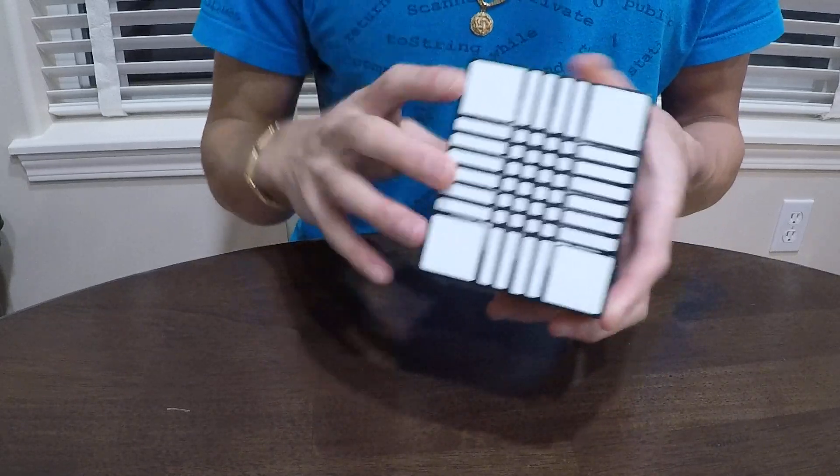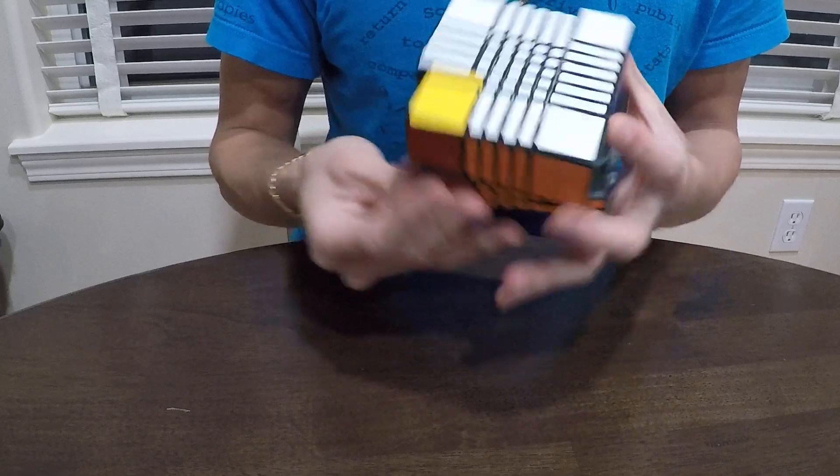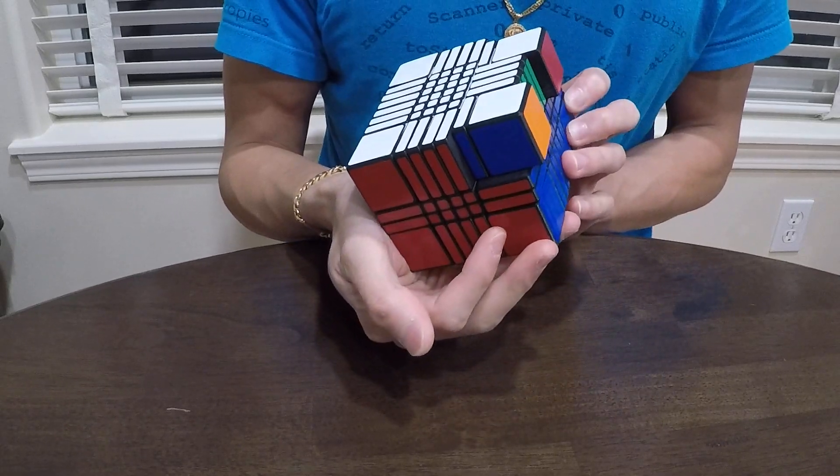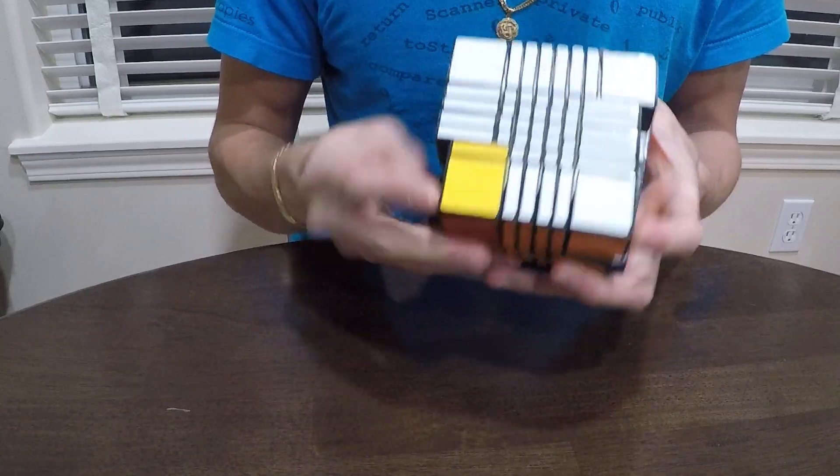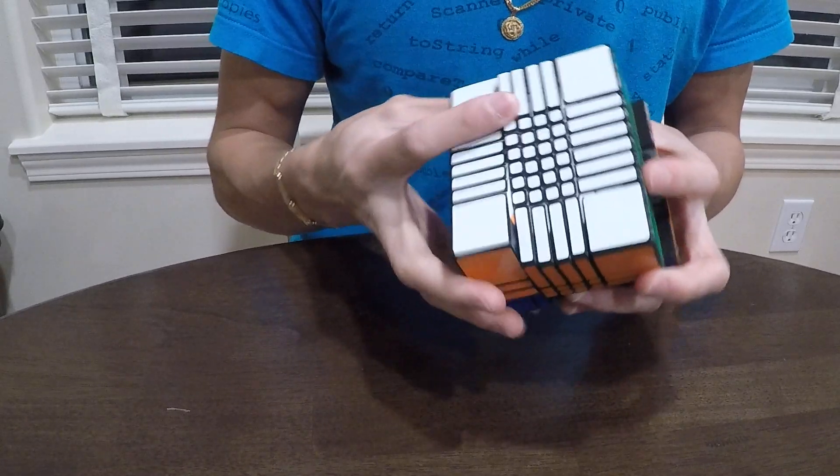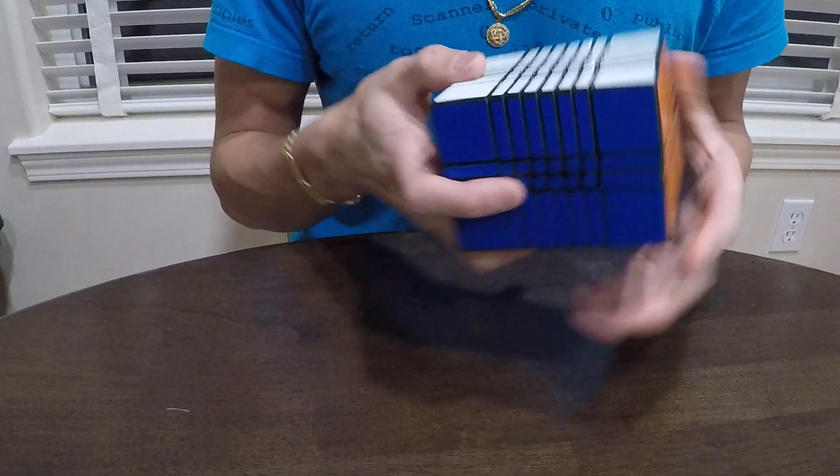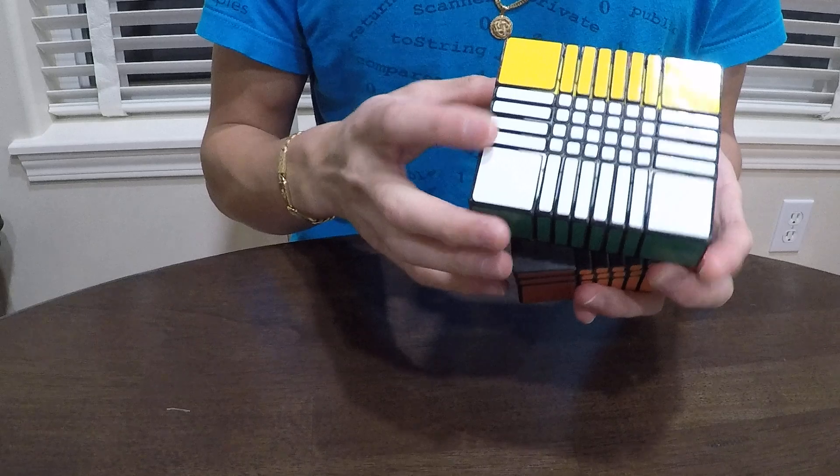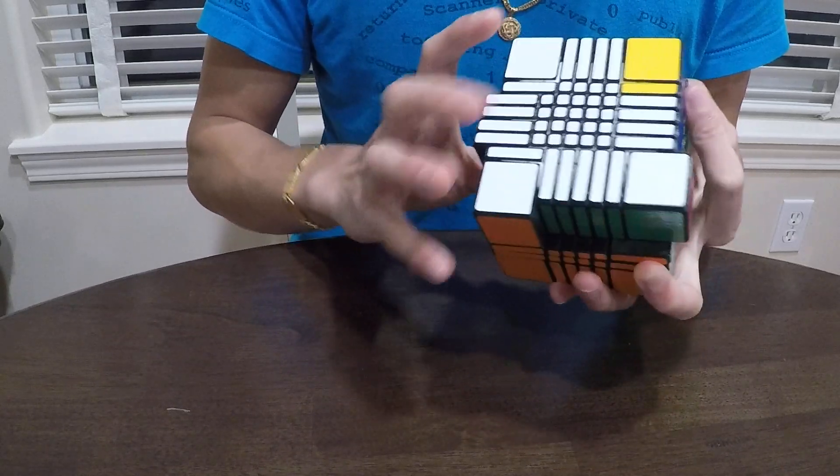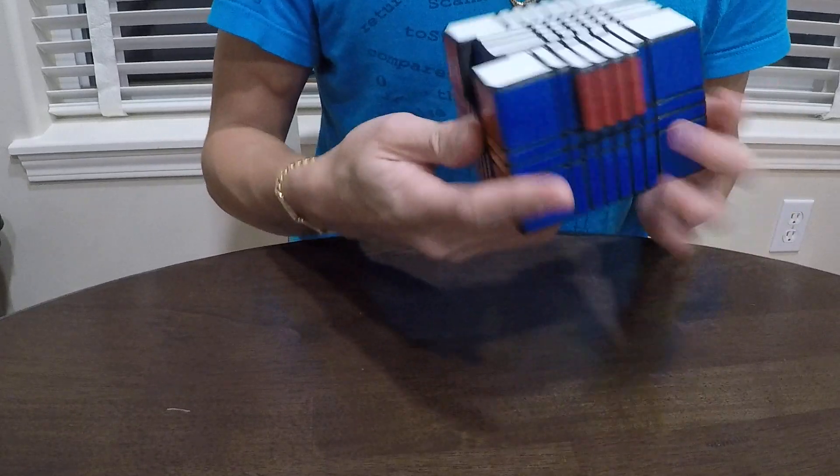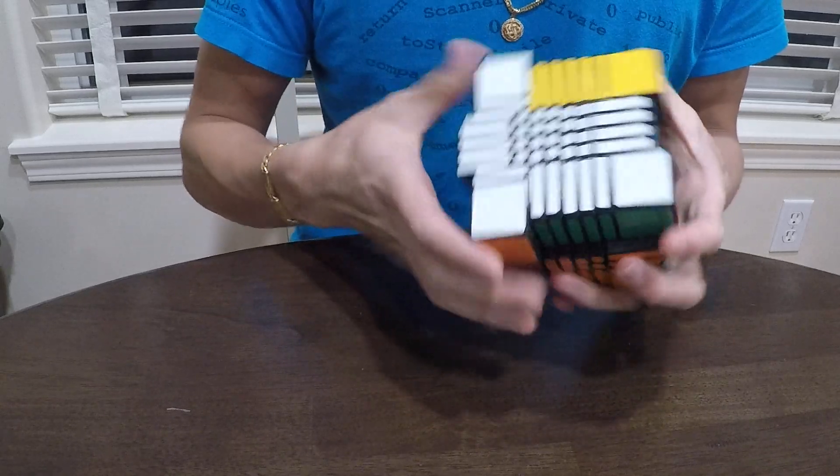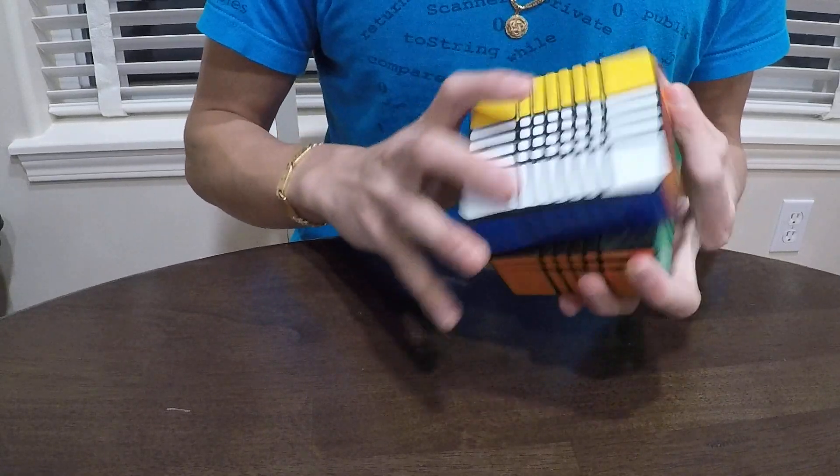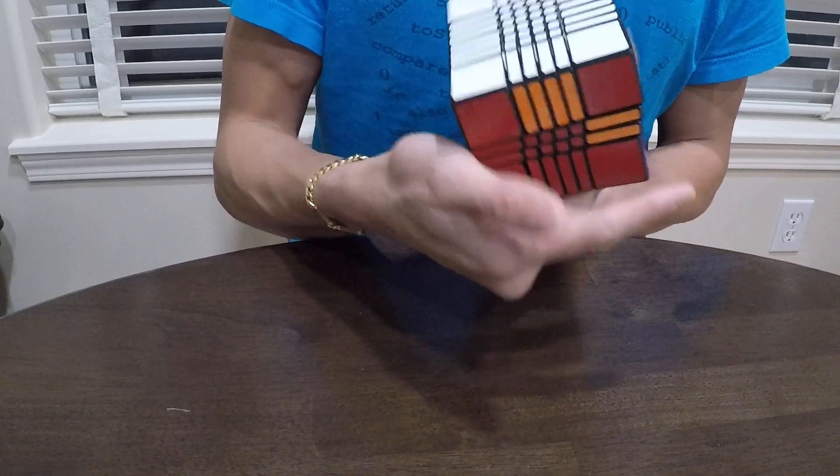And to better demonstrate that, let me perform a few algorithms. So that was effectively a T perm. And then the algorithm I always like to do is the adjacent edge center swap. So this red and blue are going to swap. If I can remember, yeah. And now I'll swap them back. Just for good measure, I can do an opposite side swap. Swap the red and orange, and then back again.